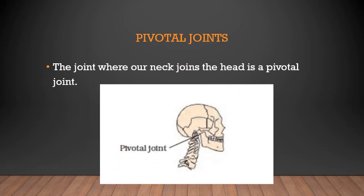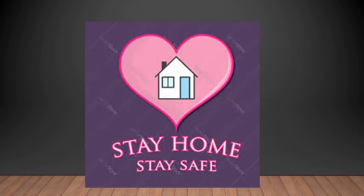Next are pivotal joints. The joint where our neck joins the head is a pivotal joint — it allows us to bend our head forward, backward, and turn it to the right or left. How are these movements different from those of our arms, which can rotate in a complete circle in the ball and socket joint? In a pivotal joint, a cylindrical bone rotates in a ring. That is why it is easy to move your head front, back, right, and left when you do exercises.